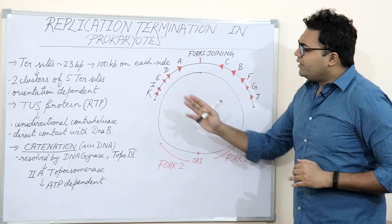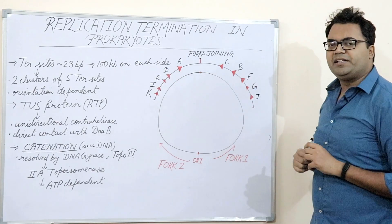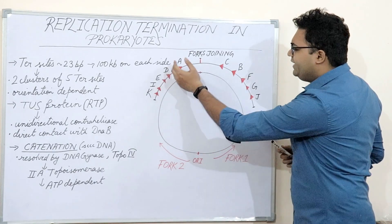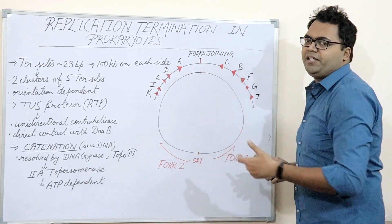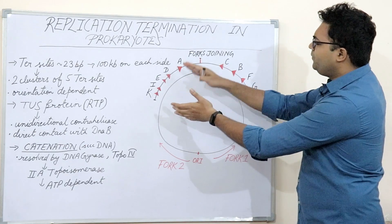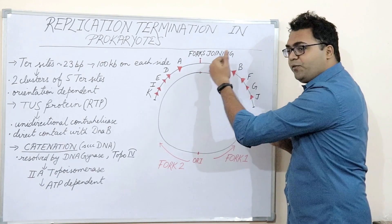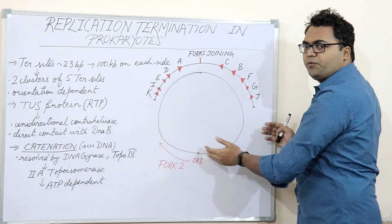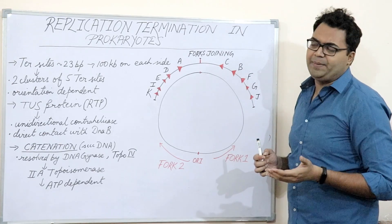Now, the specialized terms are ter sites and TUS sequences. Ter stands for termination sequences. Each termination sequence is labeled K, I, E, D, A, C, B, F, J, G. Each comprises 23 base pairs. There are five of these sequences on each side of the specific location at which the two replication forks, fork 2 and fork 1, join. They comprise almost 100 kilobase pairs or 100 kb.